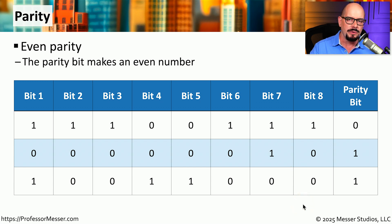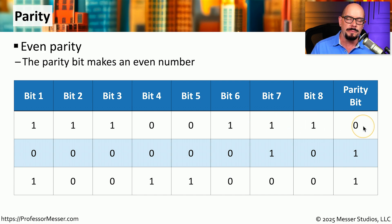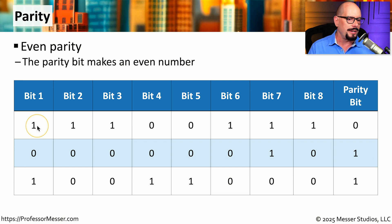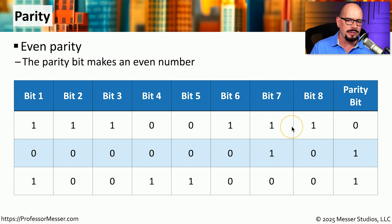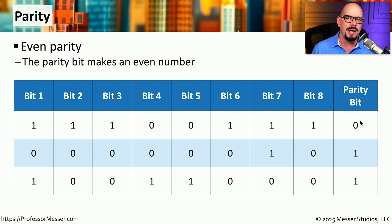When we're writing this information into memory, we would write it with not only the 8 bits of the byte, but we would include the parity bit in that storage as well. When we retrieve this information from memory, we evaluate the byte, perform our own parity check, and then compare that parity bit to the one that was stored in memory. If those parity bits are identical, we can assume that particular byte is intact and there are no errors. If those parity bits are different, then we know some type of error has occurred, either with writing that information to memory or reading it from the memory module.